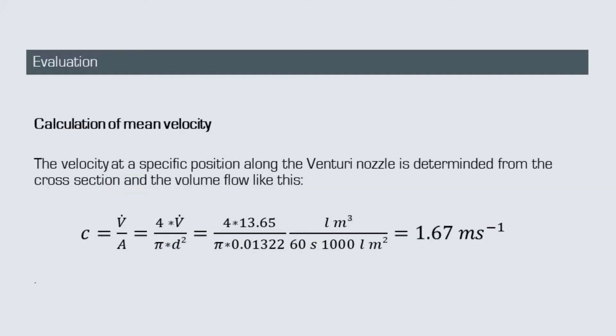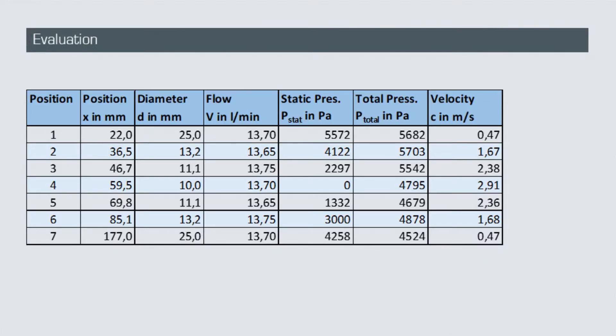We now calculate the mean velocities by simply dividing the measured flow rates by the cross-section areas like this. For position 2, we get a mean velocity of 1.67 meters per second. We do this for all other positions and add these values to our data table.